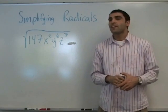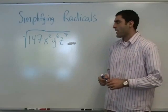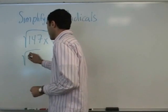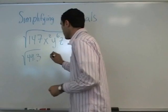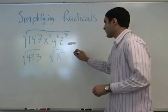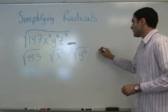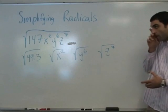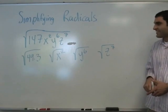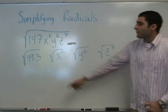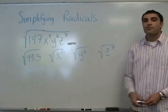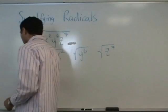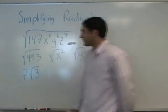You got it. 49 times 3. Yeah, it's not visibly apparent, but it's there — 49 times 3. We split it. What's the square root of 49? 7. So can we write 7 root 3? Yes — 7 root 3.